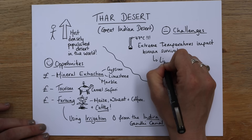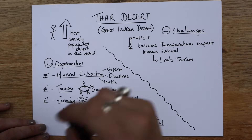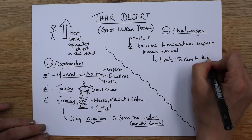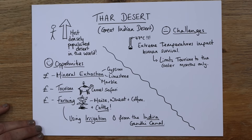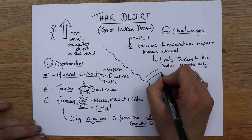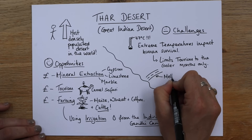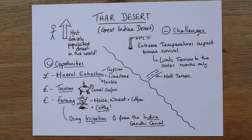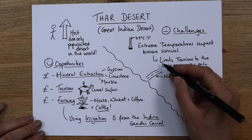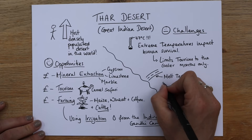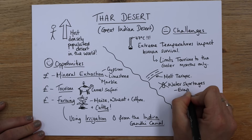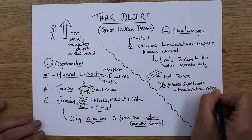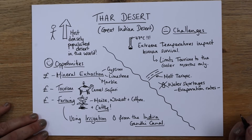One of the things extreme temperature does is it limits tourism — nobody wants to visit in the summer months, so tourism is limited to the cooler months only. It can literally melt tarmac. In this country, tarmac has been known to melt in the summer and we haven't seen temperatures that high — the highest we've had is about 37°C, about 10 degrees less. It can also cause water shortages, because evaporation rates are so high — water is evaporating quickly, though we can store it.